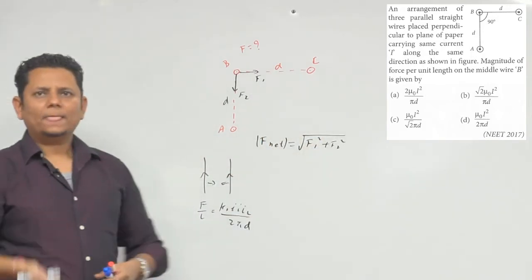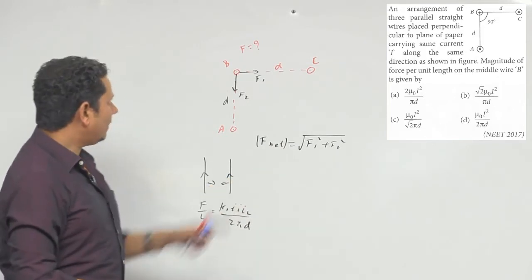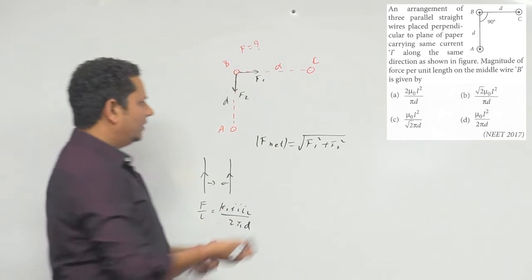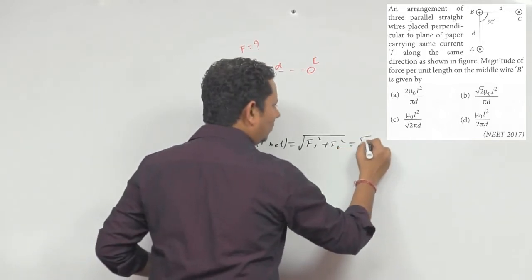अब क्योंकि दोनों में current same और distance same है तो यहां पर f1 f2 का magnitude same होएगा तो यह under root 2f times आपकी value हो जाएगी.